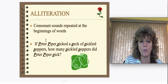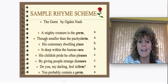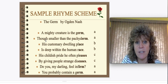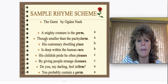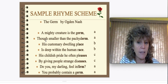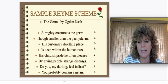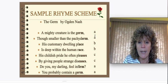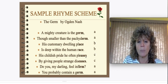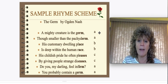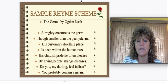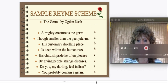Here's another fun example — "The Germ" by Ogden Nash: "A mighty creature is the germ, though smaller than a pachyderm. His customary dwelling place is deep within the human race. His childish pride he often pleases by giving people strange diseases. Do you, my darling, feel infirm? You probably contain a germ." The rhyming pattern here is AA (germ/pachyderm), BB (place/race), CC (pleases/diseases), AA again (infirm/germ). So the pattern is AABBCCAA. With eight lines, that makes it an octave.